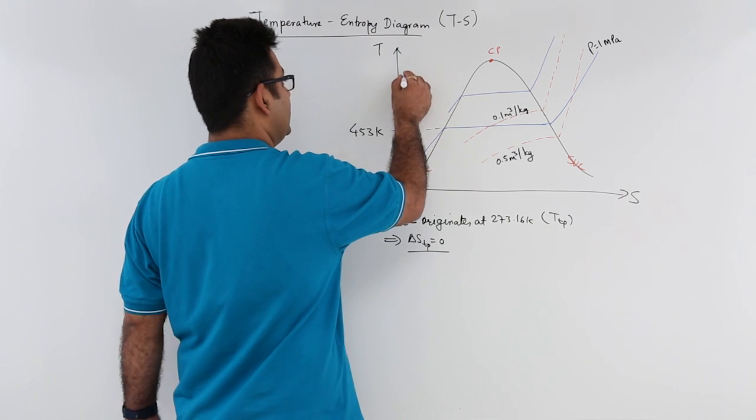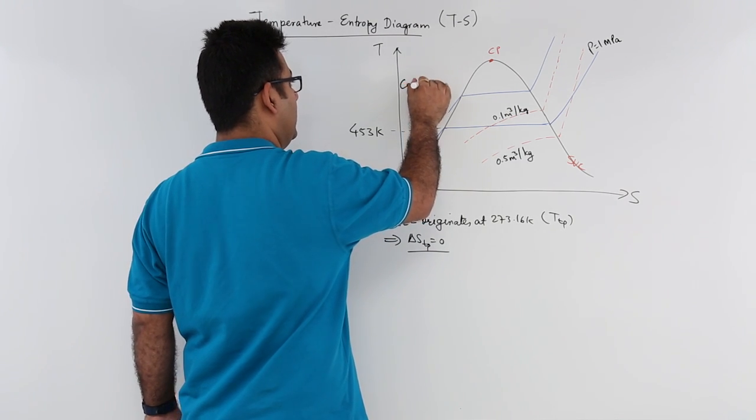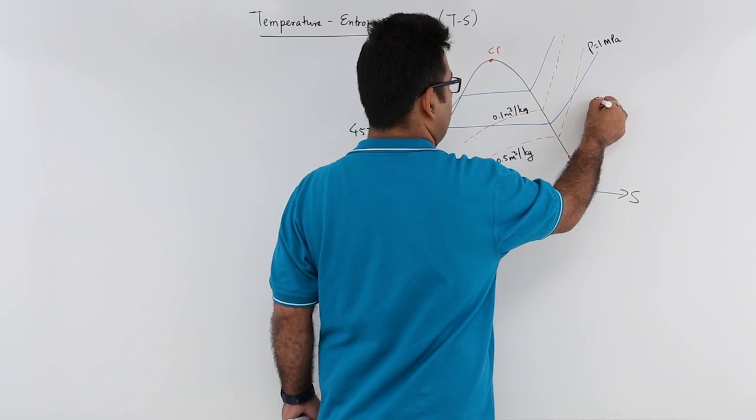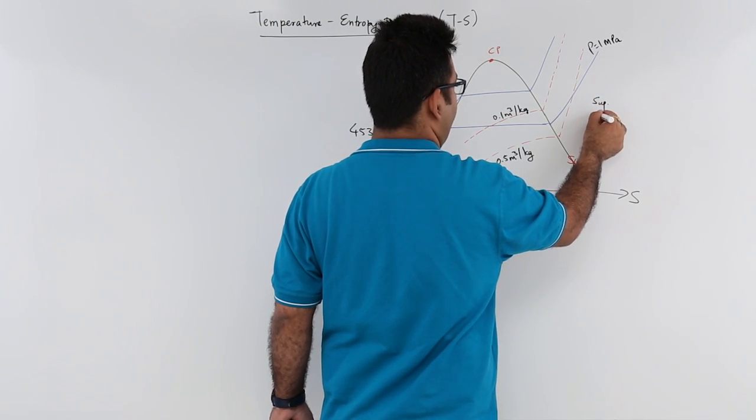This is the compressed liquid or subcooled liquid region. This is the liquid plus vapor region. And this is the superheated vapor region.